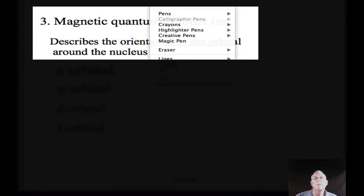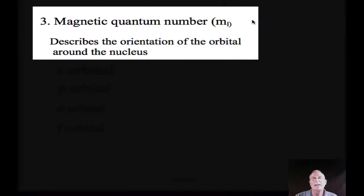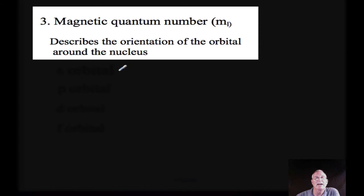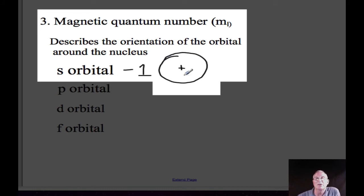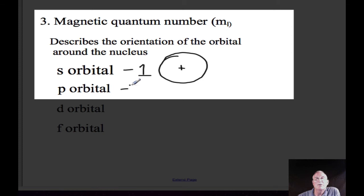The third quantum number, or magnetic quantum number, indicates the orientation of the orbital around the nucleus, or the axis upon which it lies. An s-orbital has only one possible orientation, with the nucleus at the center — rotating a sphere looks the same from all sides. A p-orbital can have three possible orientations: a p-orbital lying on the x-axis, one on the y-axis, and one on the z-axis — the px, py, and pz.